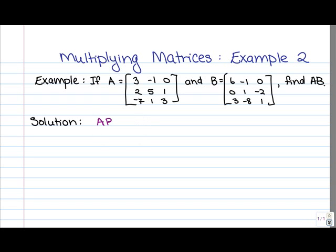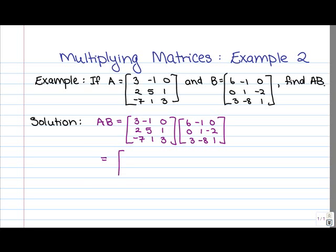Let's have a look at the solution. We write out the multiplication we plan to perform — we're multiplying matrix A by matrix B. Remember, we're multiplying the Ith row of A times the Jth column of B to get the entry in position IJ in our new matrix. To get our first entry, we're working with the first row of A and the first column of B. So what we have is 3 times 6, plus negative 1 times 0, plus 0 times 3.